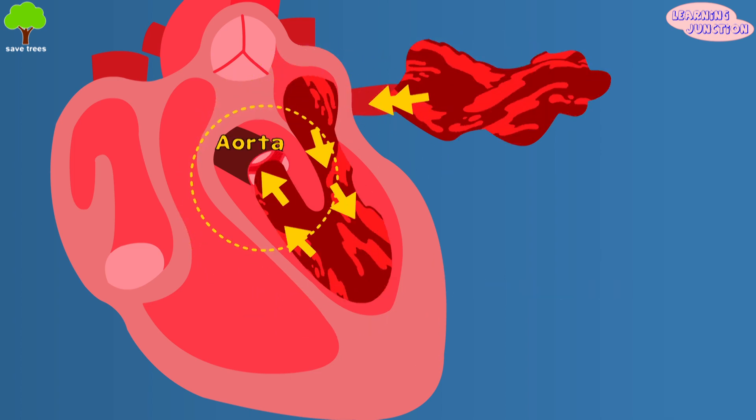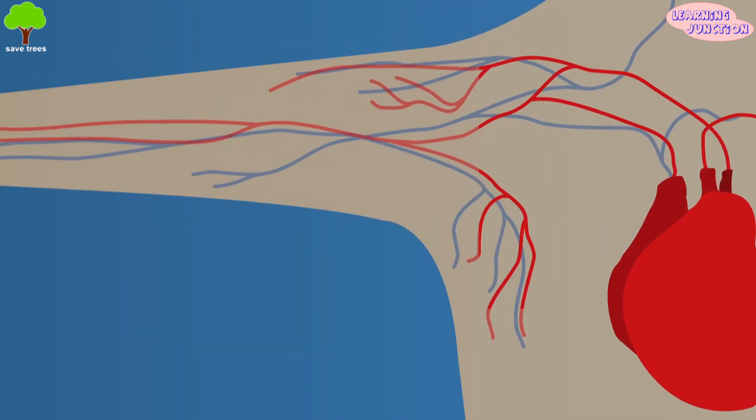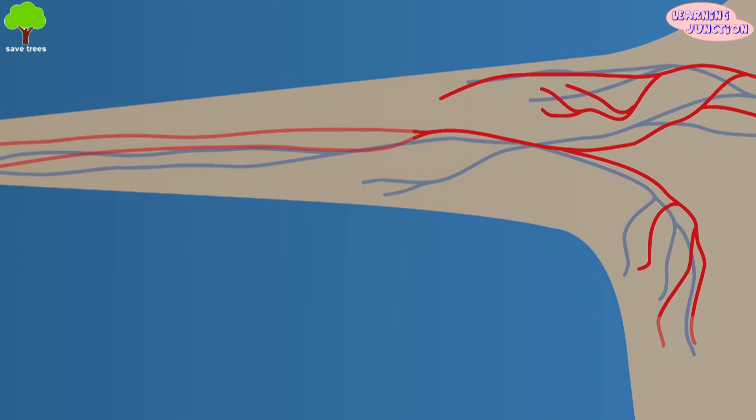the blood is pumped into the aorta that carries oxygenated blood to different parts of our body, excluding the lungs.